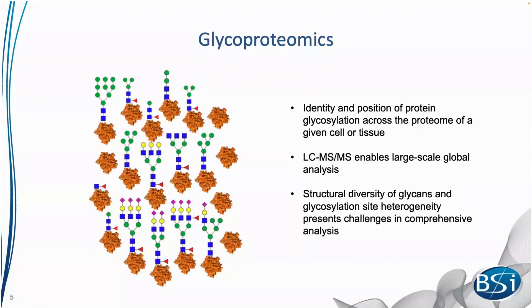Glycoproteomics aims to determine the positions and identities of the complete repertoire of glycans on glycosylated proteins in a given cell or tissue. Mass spectrometry-based approaches have allowed large-scale global analysis of glycoproteins. However, the structural diversity of glycans and their heterogeneous nature in terms of glycosylation sites make comprehensive analysis particularly challenging. Furthermore, glycans can obstruct complete fragmentation of the peptide backbone, and traditionally they have been removed for simplicity, at the cost of losing information about where the glycan localizes.